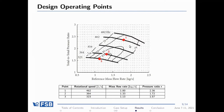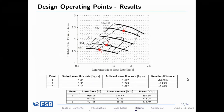The design operating points Máté simulated are shown in the operating map — three points at different rotational velocities, all best efficiency points with available experimental data. Comparing results to experiment, the largest relative difference in mass flow rate through the blade passage was about 10%, while the measurement uncertainty was about 6%, so we were quite satisfied with this result.